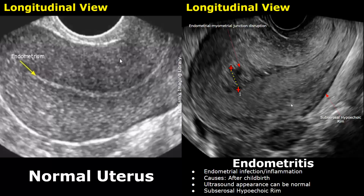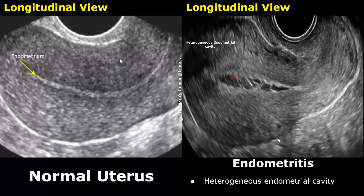The next feature usually associated with endometritis is a subserosal hypoechoic rim. You can see a dark hypoechoic border around the uterus. Normally we see a bright hyperechoic border around the uterus. The hypoechoic rim represents fluid due to inflammation. A subserosal fibroid is also present in this image. A heterogeneous endometrial cavity is usually seen in endometritis; however, this feature needs to be correlated clinically.